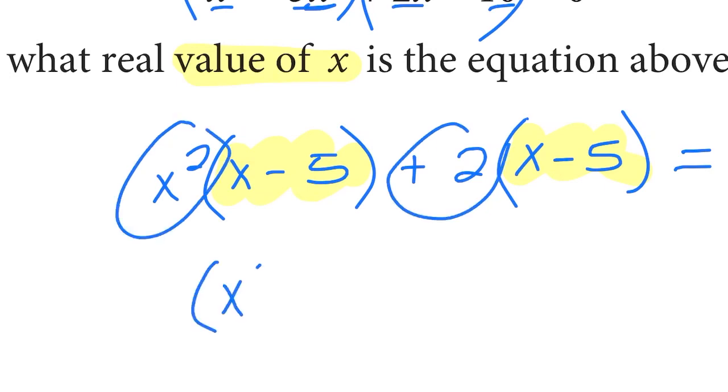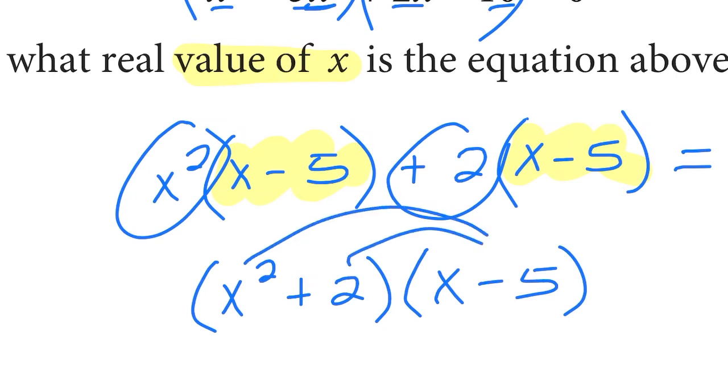Now, since you have this factor in common, which is the whole goal when you're factoring by grouping, then we can pair these other two pieces together as one factor. This is the same thing as saying x squared plus 2, and then times x minus 5.